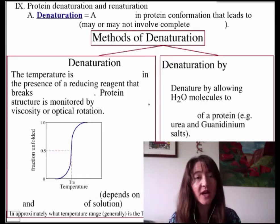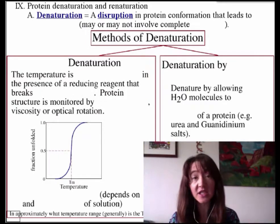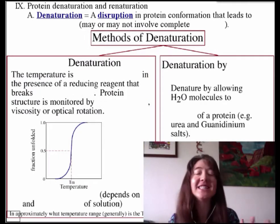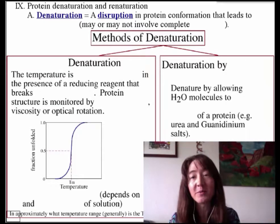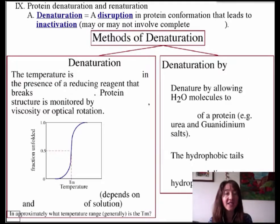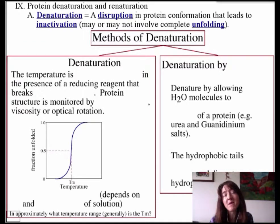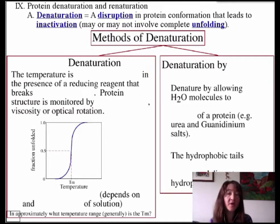It may not be complete unfolding to a linear chain. We can write that down and say that denaturation is a disruption — a disruption in the protein conformation — enough of which will lead to an inactivation or a complete loss of functioning. It may or may not involve complete unfolding, but it's certainly enough of a disruption to take away the function. We have a couple of types, or methods, of denaturation.